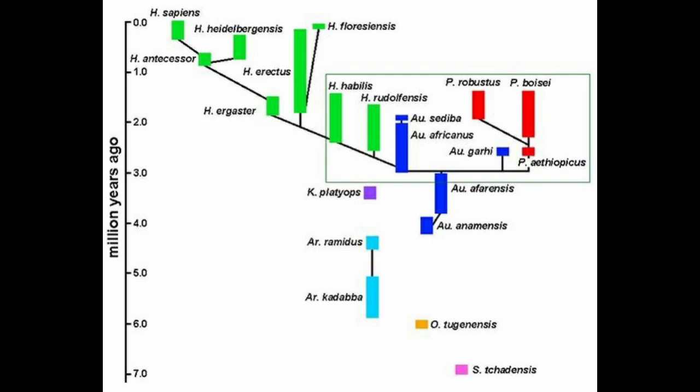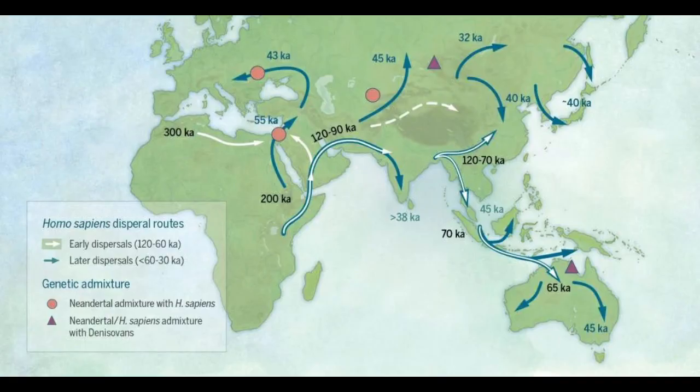Somewhere around about 700,000 years ago — there's some disagreement on this — the line diverges from what is probably Homo erectus towards ancestral Homo sapiens. And much later, somewhere around 300,000 years ago, some of these early Homo sapiens begin to flow out of Africa.